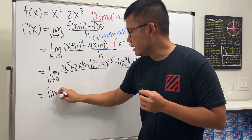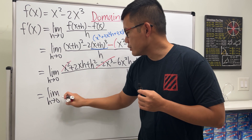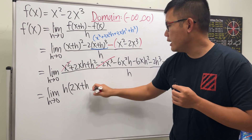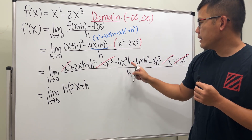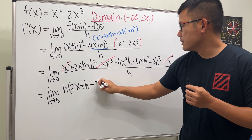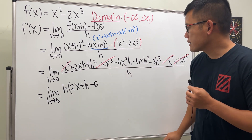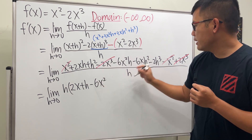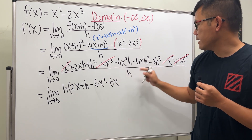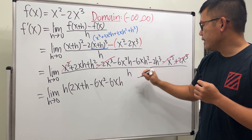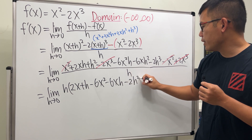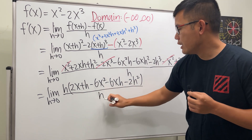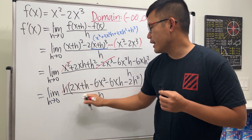Factoring out h from the numerator, we get the limit as h approaches zero of: h times (2x plus h minus 6x squared minus 6xh minus 2h squared), all divided by h. The h in the numerator and the h in the denominator cancel, which is very nice.